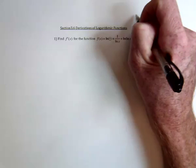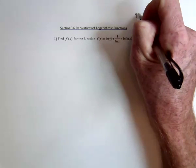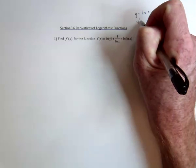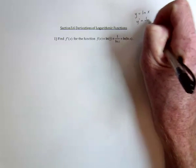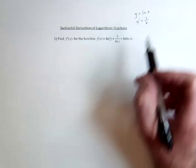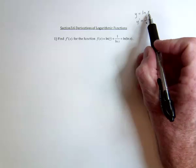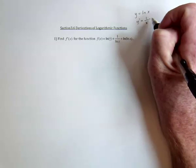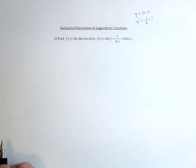The derivative of the natural logarithmic function is pretty simple — it's 1 divided by the argument. So in this case, 1 divided by x. And if this is anything more complicated than just an x, you need to use the chain rule, multiplied with the derivative of whatever the argument is.